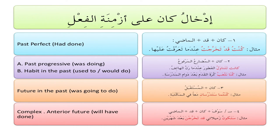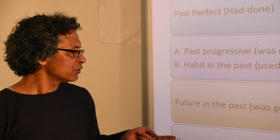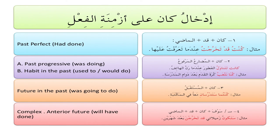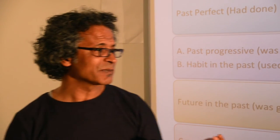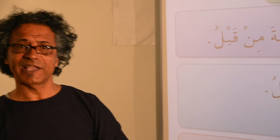The last possible combination is سا أو سوف مع كان مع قد مع الماضي — a fairly compound structure — giving us what's called the complex or anterior future, meaning 'will have done.' It's a way of looking at the future as if it is already past and over. Example: ستكون زميلاتي قد تخرجن بعد شهرين — my female classmates will have graduated in two months.